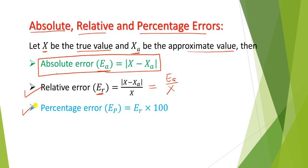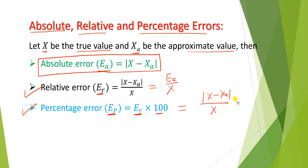The third type is the percentage error, denoted by E_p. E_p is equal to E_r multiplied by 100, that is, the modulus of x minus x_a divided by x, multiplied by 100. This formula gives the percentage error.